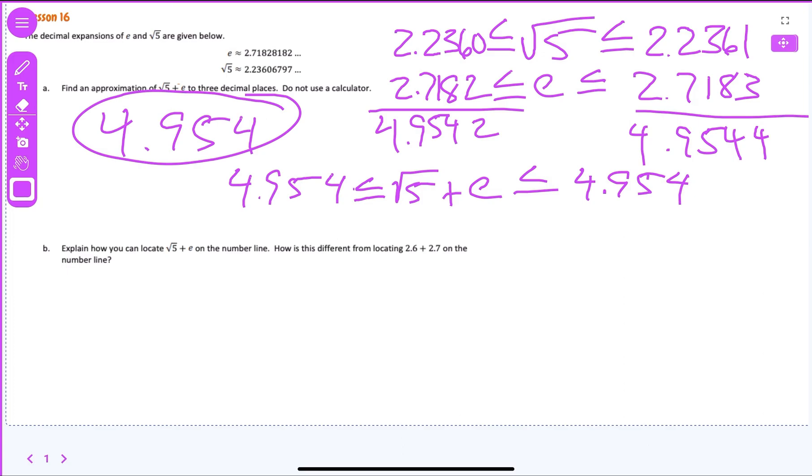Now, part B says, explain how you can locate the square root of 5 plus Euler's number on a number line. How is this different from locating 2.6 plus 2.7 on the number line? Anybody want to take a stab at that? We're not going to be able to, are we? We can't actually do it.